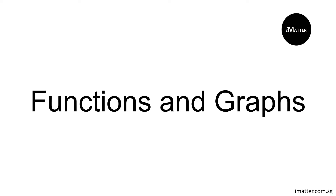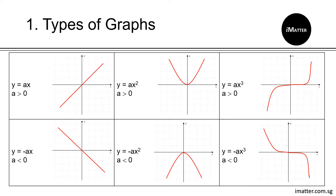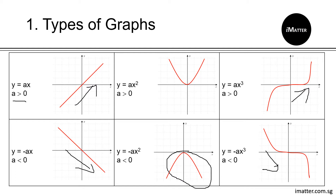Let's take a look at functions and graphs. Here are the types of graphs ranging from x to the power of 1 to x to the power of 3. If you notice that the number in front of x, denoted by A, when it's more than 0 or a positive number, it will generally go up for these graphs or in the positive region. Whereas when A is negative, it will generally go down or be in the negative region. For quadratic graphs, which is x-squared, when A is positive it will look like a smiley face, and when A is negative it will look like a sad face.